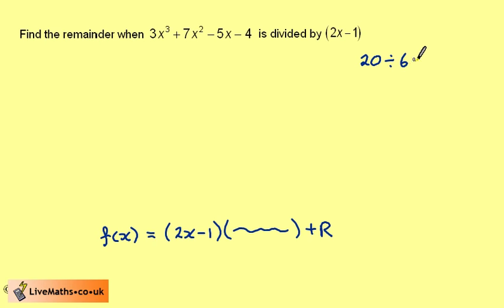If we had 20 divided by 6, we know this is 3, remainder 2. And we could write 20 as 6 times 3, add 2, where 6 is the divisor, 3 is the quotient, and 2 the remainder.